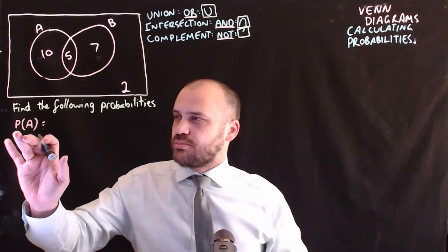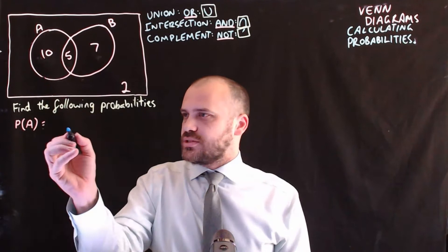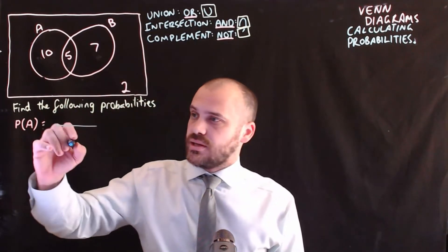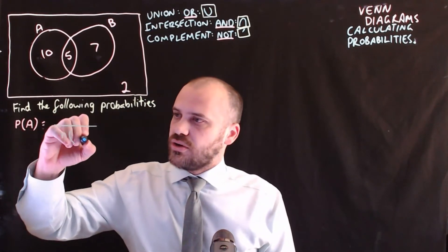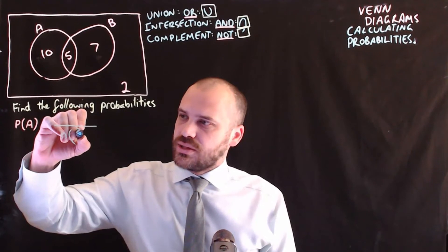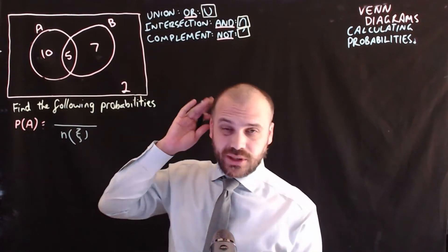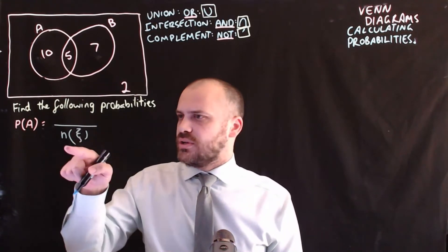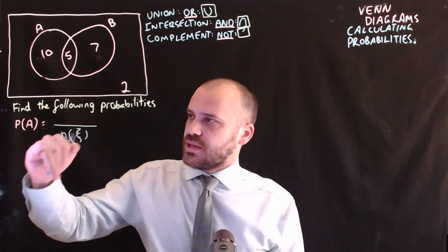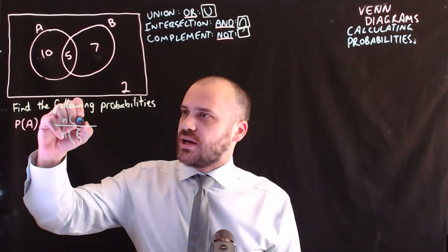First question: we're going to find the probability that something is in set A. The way to do this is always the same — we need the total number of elements, that's the size of the sample space, the universal set. Then on the top is whatever we're trying to find the probability of: the size of set A.